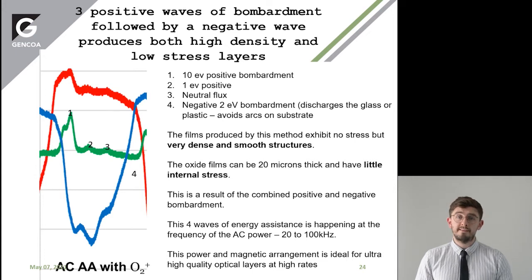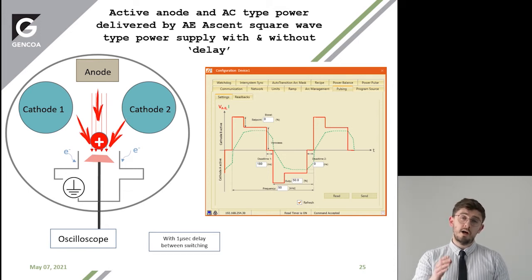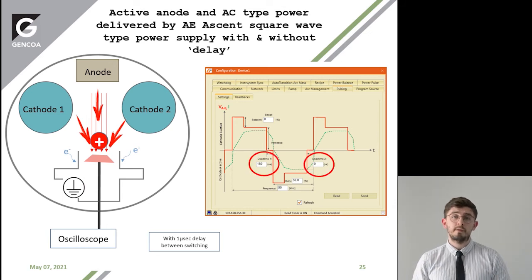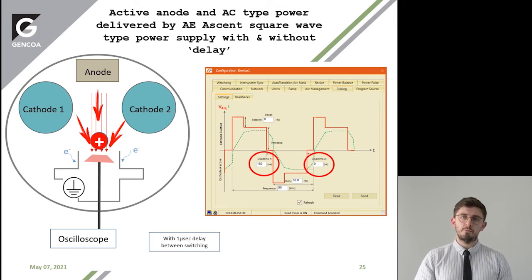This is the Advanced Energy Ascent power supply. In this square wave, you have the addition of a dead time. During a half cycle of the pulse, you can switch off the pulse, and then in the other half, you can also switch off the pulse. We're looking at whether there is any benefit to our process — can we measure any voltage change at the probe surface?